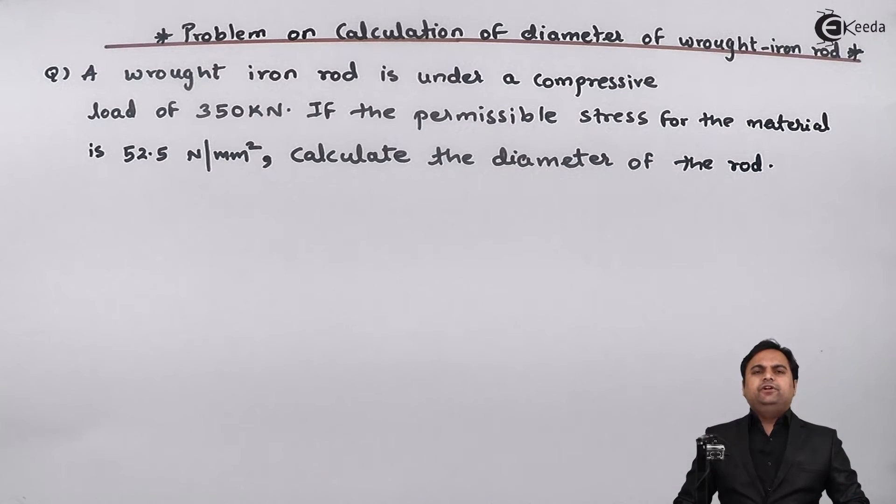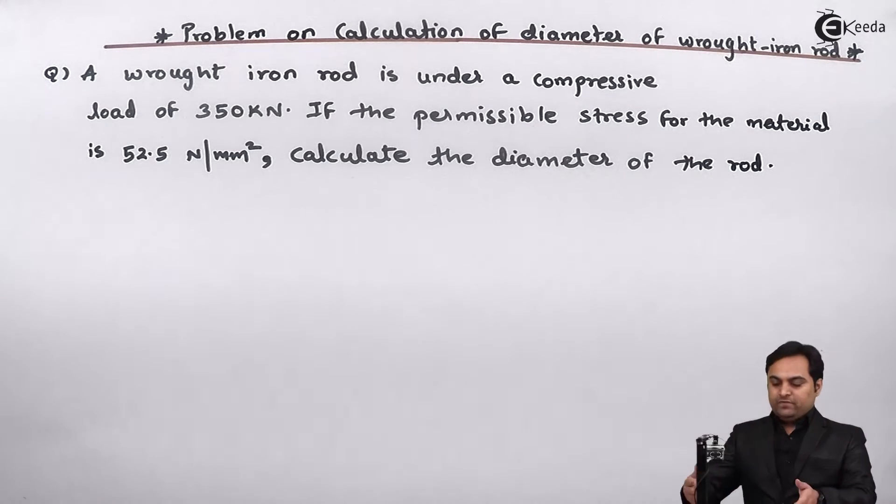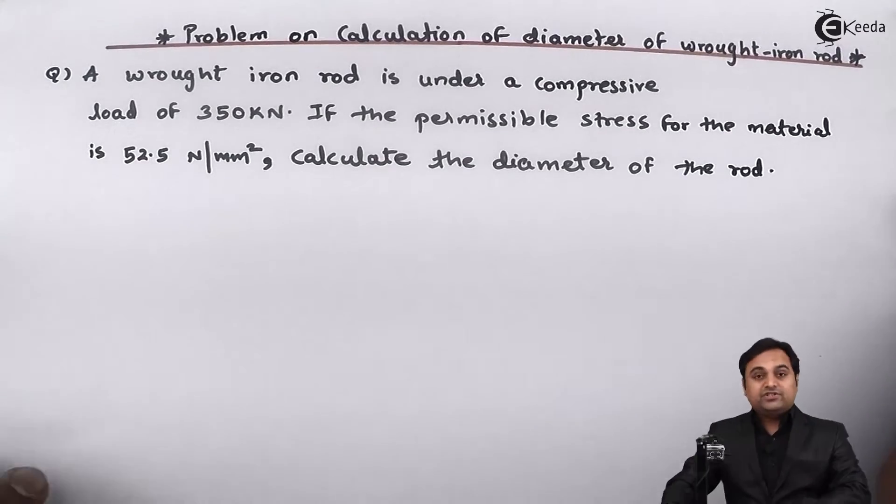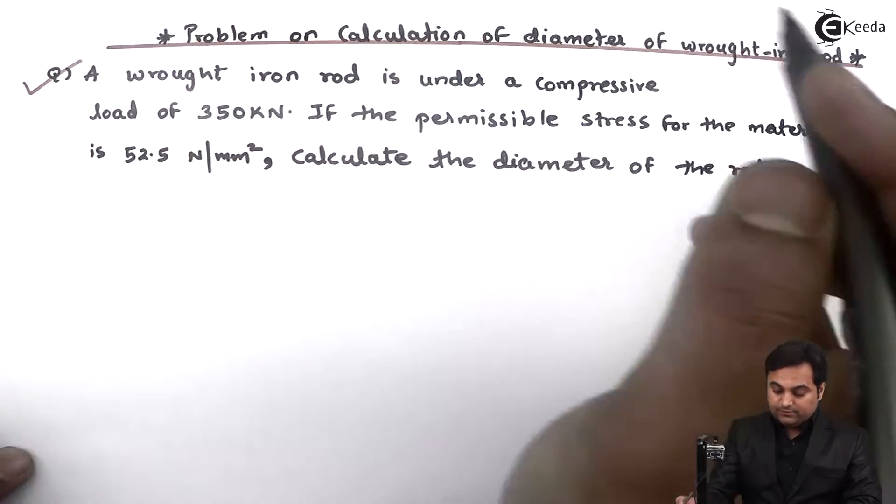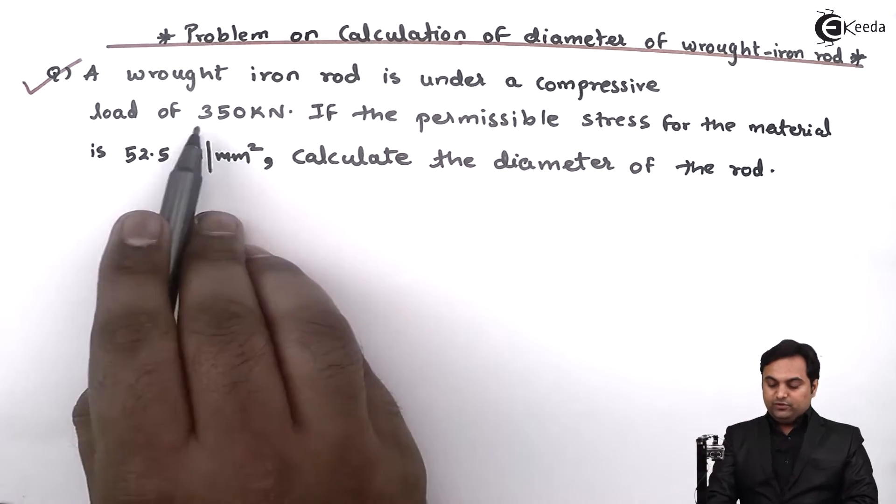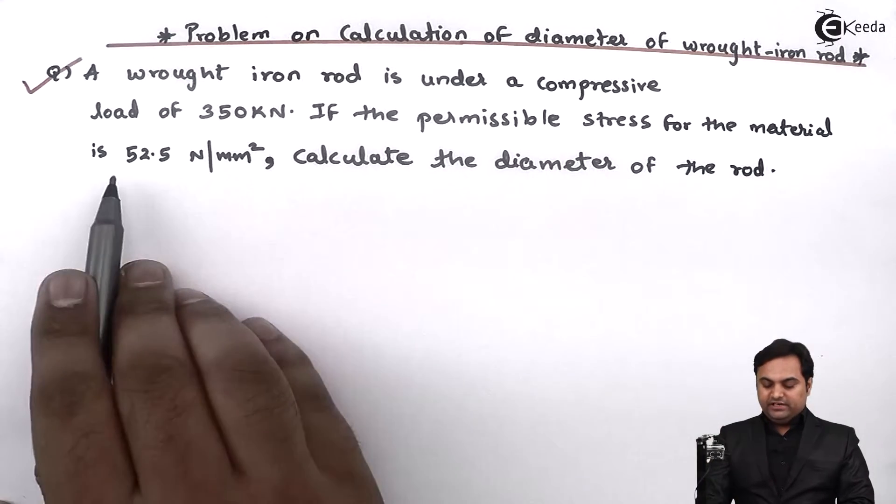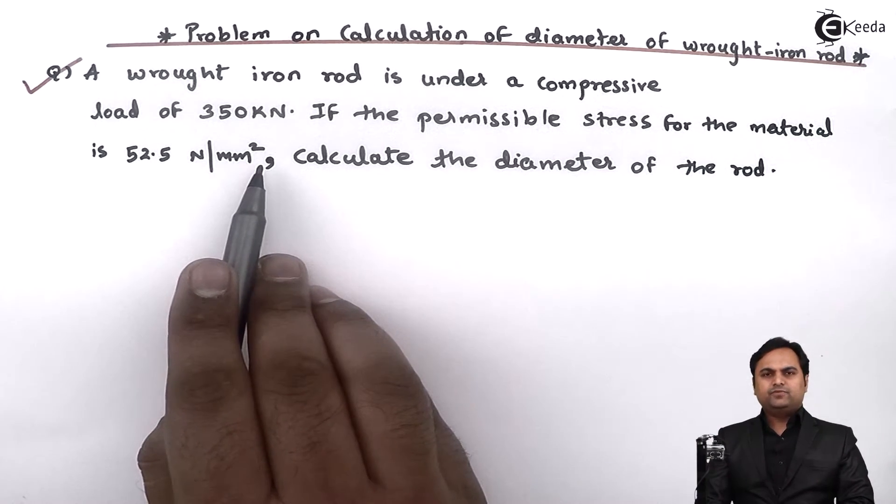Hello friends, here in this video we are going to see a problem on calculation of diameter of a rod. A wrought iron rod is under a compressive load of 350 kilonewton. If the permissible stress for the material is 52.5 newton per mm square